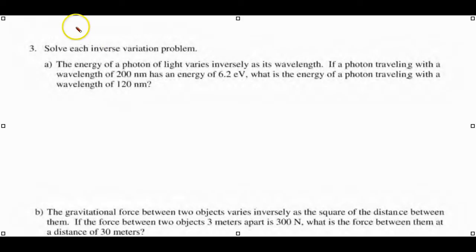Keep in mind, direct variation has the formula Y equals KX. Because now we're going to do inverse variation, and the formula for inverse variation is Y equals K over X. Any time you want to find K, you just multiply both sides by X, and you get K will always equal the product of X and Y.